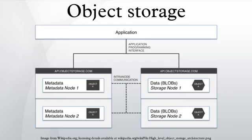One of the first object storage products, Lustre, is used in 70% of the top 100 supercomputers and 50% of the top 500.